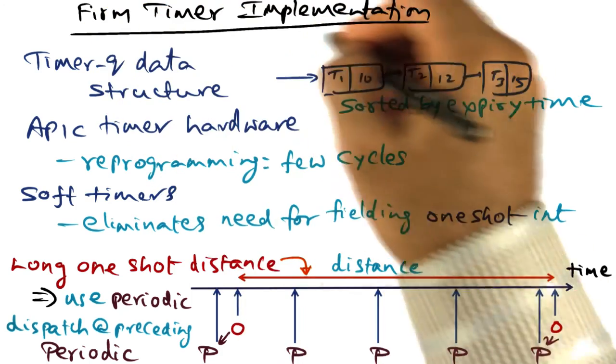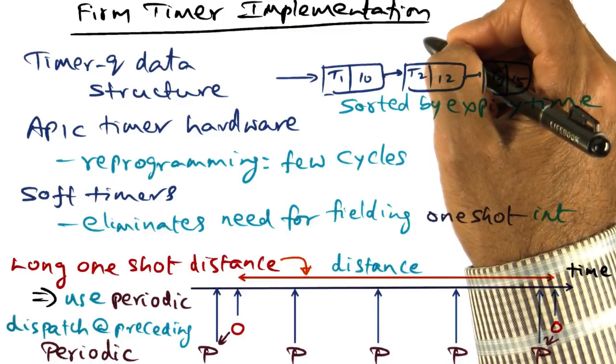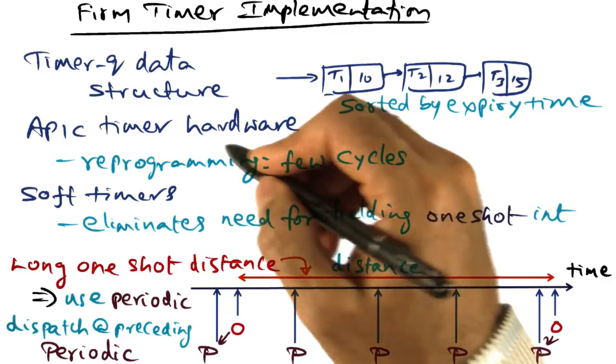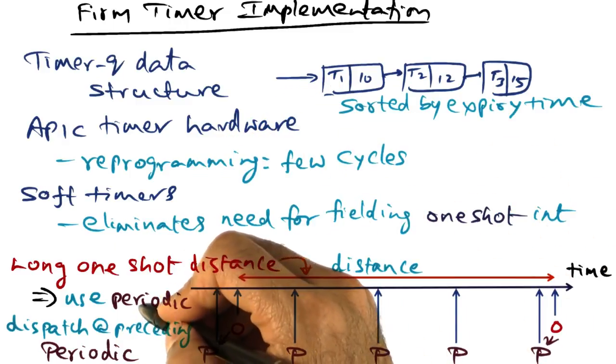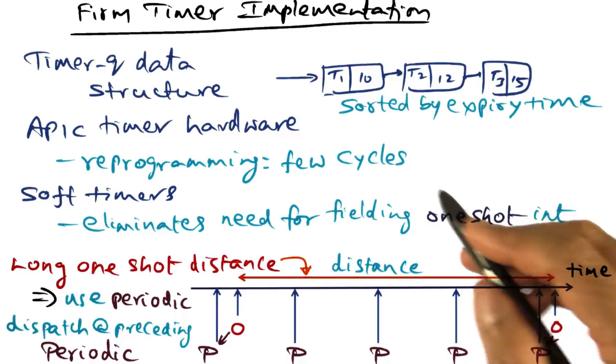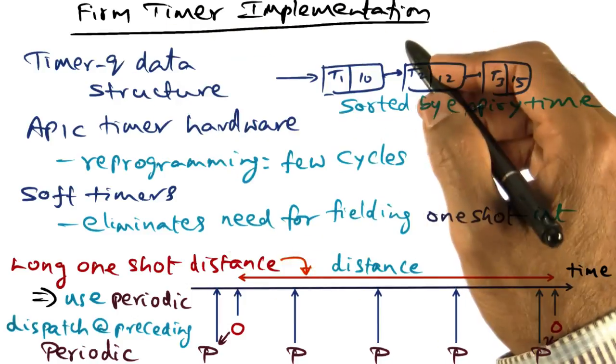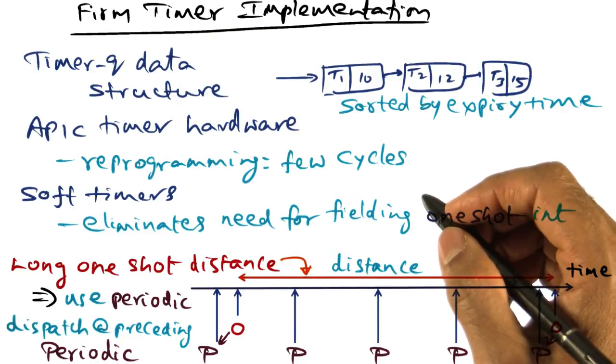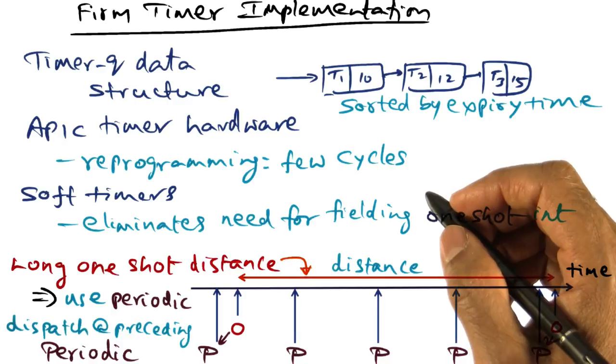Those are the ideas enshrined in the firm timer implementation in TS-Linux that essentially combines the advantages of one-shot timers with soft timers with periodic timers. This should give you a feel for how TS-Linux by a clever implementation reduces the timer latency, the first component of the latency from the point of event happening to event activation.